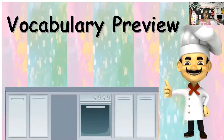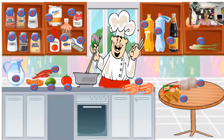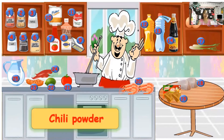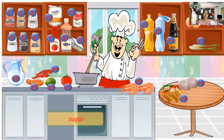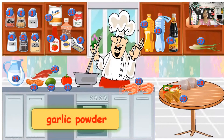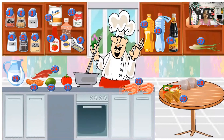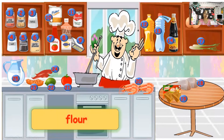All right, so we're done cooking. Let's review the ingredients that we usually use inside the kitchen. First: chili powder, sugar, MSG, salt, pepper — there are two kinds: black pepper and white pepper — garlic powder, ketchup, fish sauce, and butter. Some of the ingredients we did not use today, but most of these are commonly used inside the kitchen.